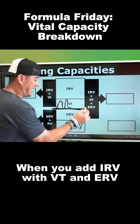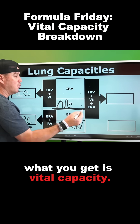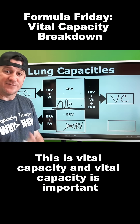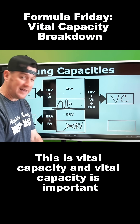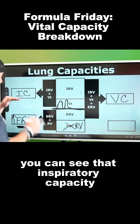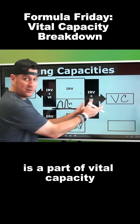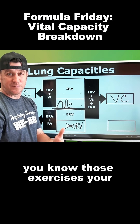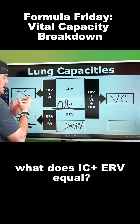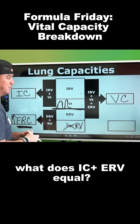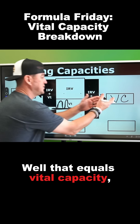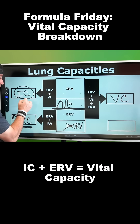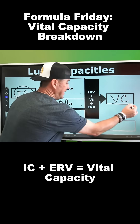When you add IRV with tidal volume and ERV, what you get is vital capacity. Vital capacity is important. You can see that inspiratory capacity is a part of vital capacity. Those exercises your professors give you — what does IC plus ERV equal? That equals vital capacity, because IRV and tidal volume equal IC, plus ERV, equals vital capacity.